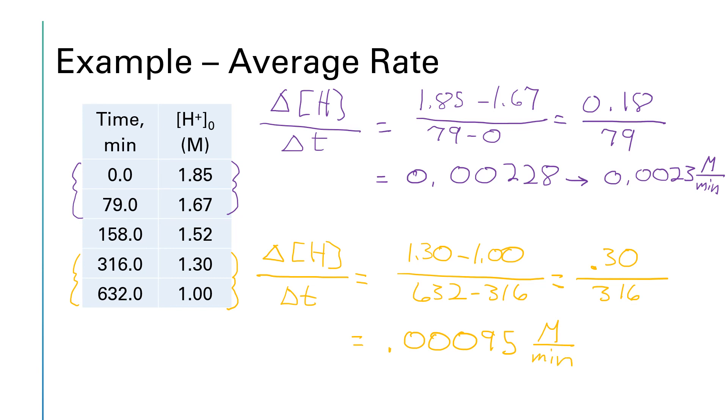Now, how does that compare to the earlier interval? Well, it looks like it's a smaller number. We went from 0.0023. Now we've got another zero in there. 0.00095. This is a general trend with reaction rates. We said earlier that the rate of a reaction depends on the concentration of the reactants. As time goes by, the concentration is dropping. So if the concentration has gone down, the reaction rate will also go down. So let me just kind of make a note of that, that as time passes, the concentration of reactants drops. And then that means that the rate consequently drops as well.